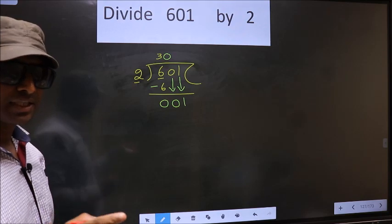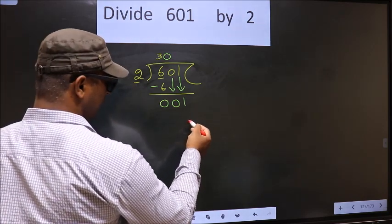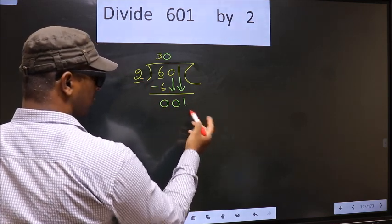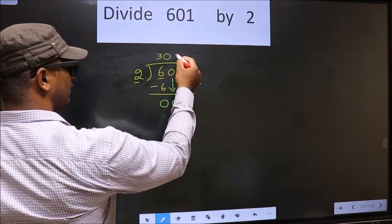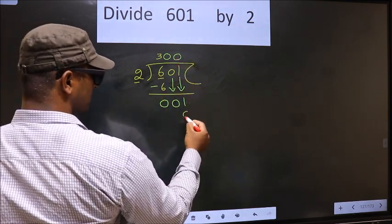Instead what you should think of is, what number should we write here? If we write 2 here, that is larger than 1. So what we do is, we take 0 here. So 2 into 0, 0.